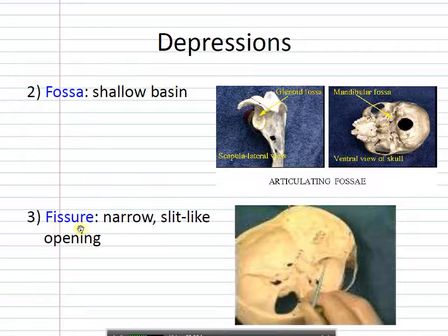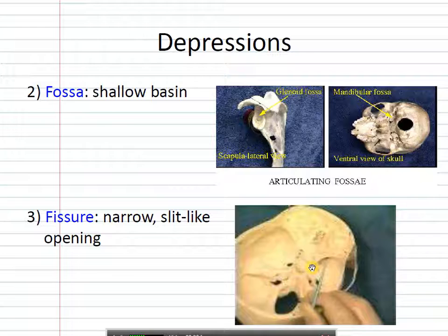Next is a fissure, and it's a slit. In the skull you're going to see lots of little tiny fissures — slits for things like nerves or blood vessels to go through.